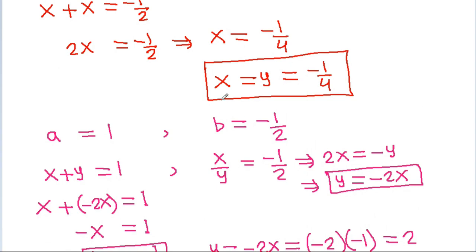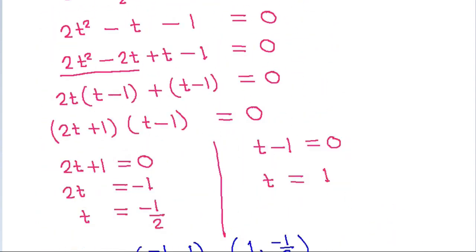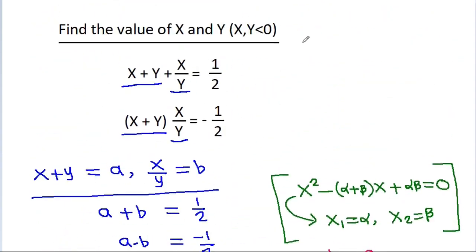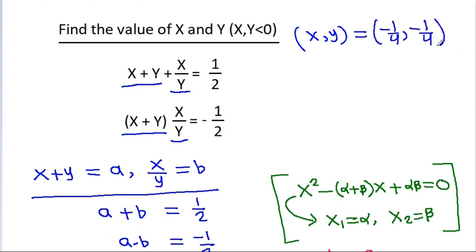So the answer is x = minus 1 by 4 and y = minus 1 by 4.